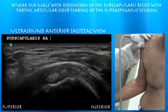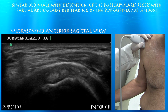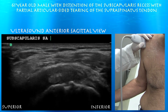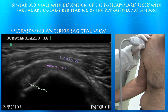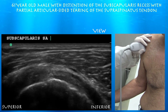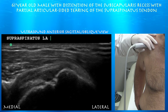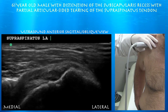Looking at the subscapularis tendon — here you can see the interval with the biceps tendon, and then inferior to that you see the subscapularis tendon. Here is just another view to get a better look at the subscapularis tendon; if you go inferior to that you'll get your subscapularis tendon. Here at the very distal anterior supraspinatus tendon you can see some small partial tearing of the articular surface of the distal supraspinatus.